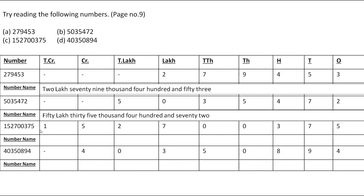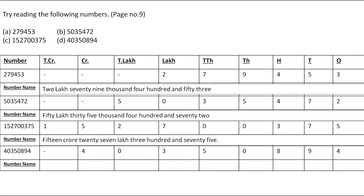In the next number, the first digit falls in the Ten Crore group and five is in the Crore place, so 15 falls in the Crore group. Then 27 is in the Lakh group, and the two zeros are in the Thousands group. Then three, seven, five are in the Ones group. So the number name will be 15 crore, 27 lakh, 375 — since there are zeros in the Thousands group, we directly state the Ones group as 375.